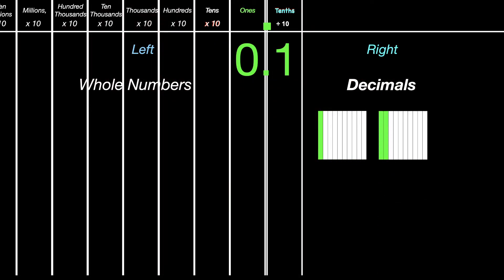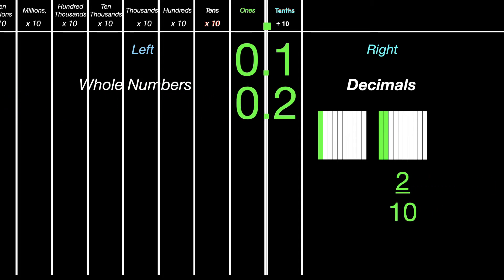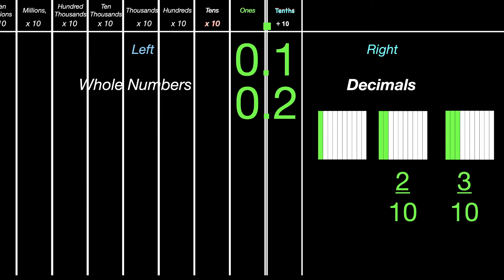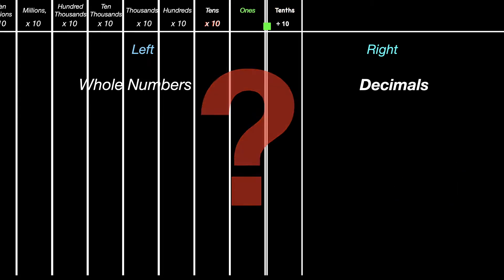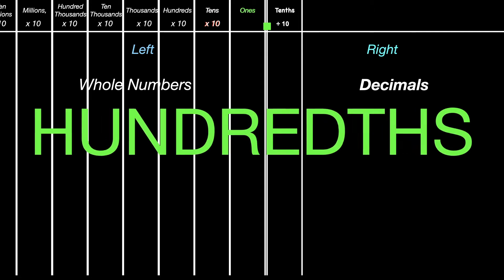So this would be two tenths, and two tenths would be written as zero decimal point two. And three tenths in fraction form — but if we want to write that fraction as a decimal, it would be zero decimal point three. That three is in the tenths place value. Now that takes care of tenths, but what about hundredths? Because that's what this lesson is about.